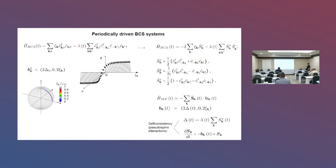At equilibrium, the pseudo-spin texture defining the ground state has all pseudo-spins aligned to the magnetic field to minimize the Hamiltonian. For example, very far from the Fermi level and below it, the Z component is negative and the pseudo-spin points down. In the positive part, the Z component is positive and the pseudo-spin points up. At the Fermi level, the pseudo-spin aligns in the X direction. You can plot this pseudo-spin texture in the positive part on the Bloch sphere to get the initial condition.